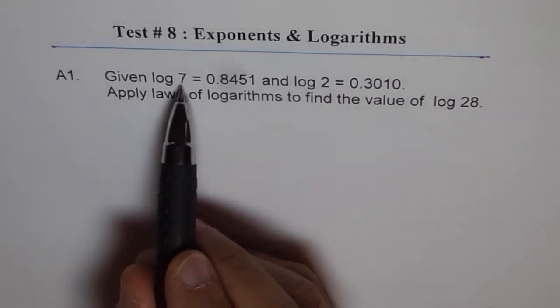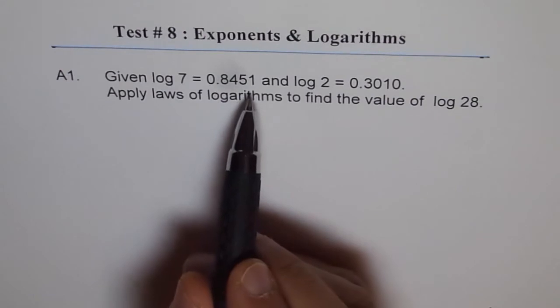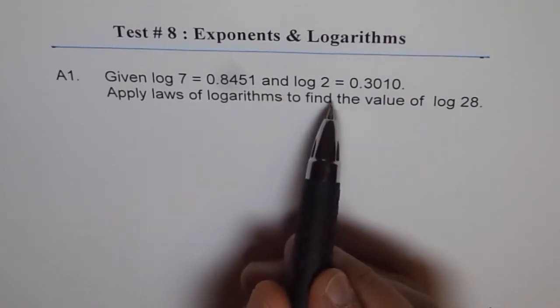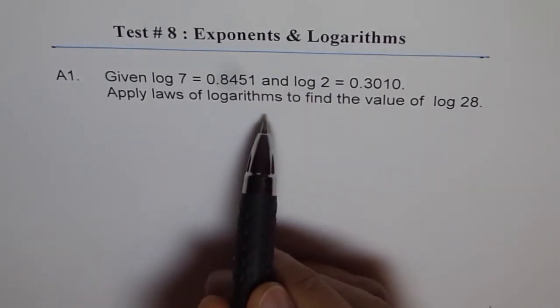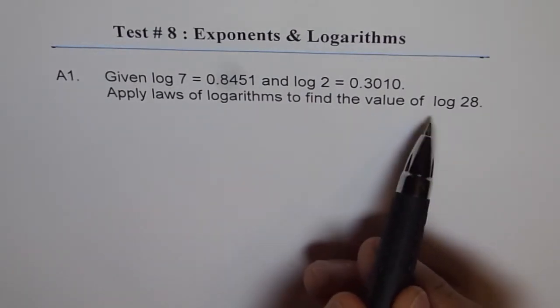Given log 7 equals 0.8451 and log 2 equals 0.3010, apply laws of logarithms to find the value of log 28.